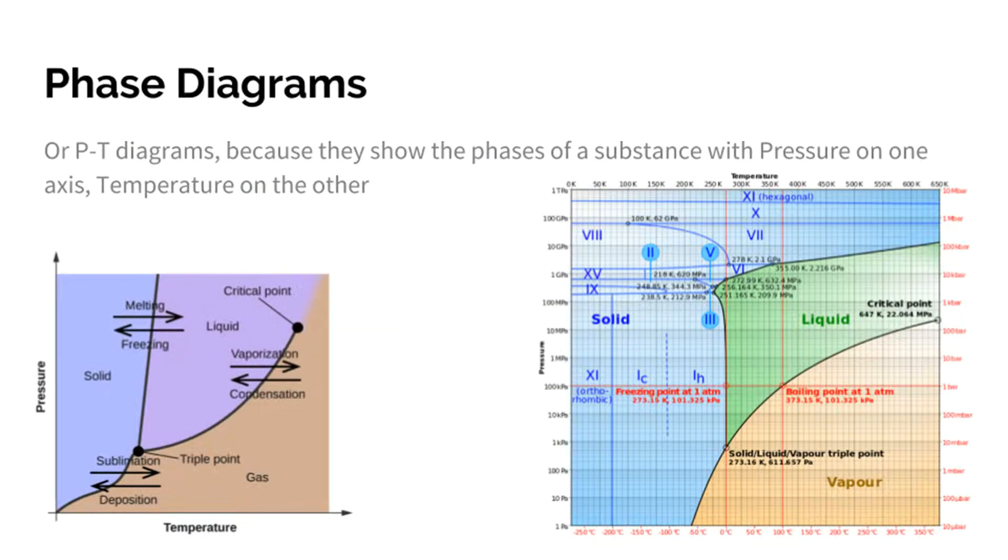Because what I want to talk about now is phase diagrams, or pressure-temperature diagrams, PT diagrams, because what you have here is a chart with pressure on one axis, the vertical axis, and temperature on the horizontal axis. And what these show you is the different phases of a substance that exist at various pressures and temperatures. So the lines on this chart represent the phase changes. So, the line between solid and liquid is the melting slash freezing line at different temperatures, or different pressures and temperatures. Between liquid and gas, it's the boiling and condensation line. Between solid and gas, the sublimation and deposition line.